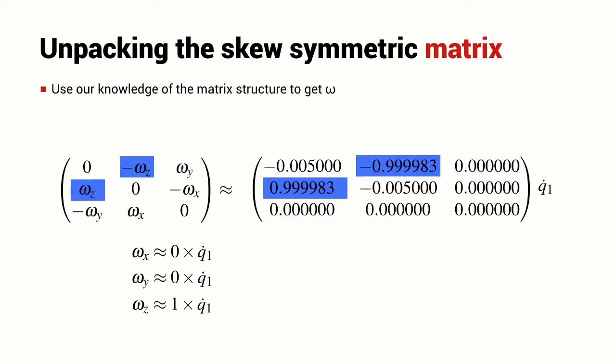So what we've done is match the elements in our exact skew symmetric matrix and our approximate skew symmetric matrix and written some relationships between the components of the robot end effector angular velocity and the rate of change of the first joint angle. That's Q1 dot. So I can write it now in matrix form like this.